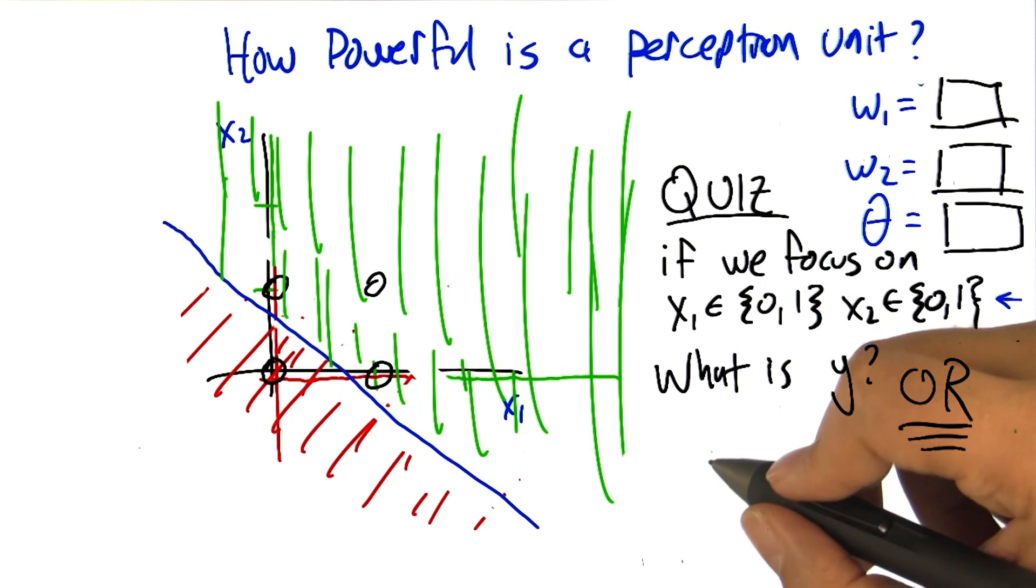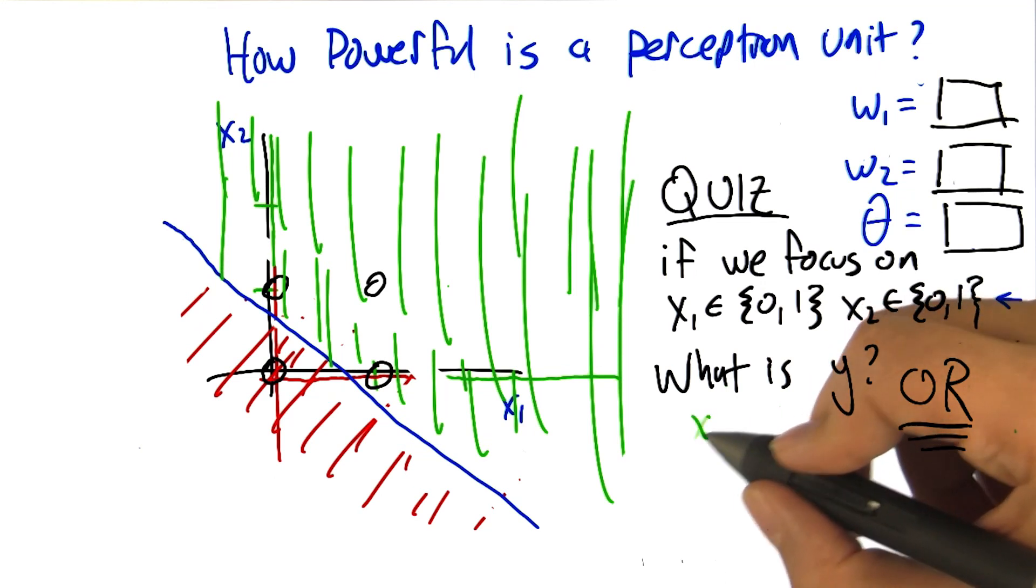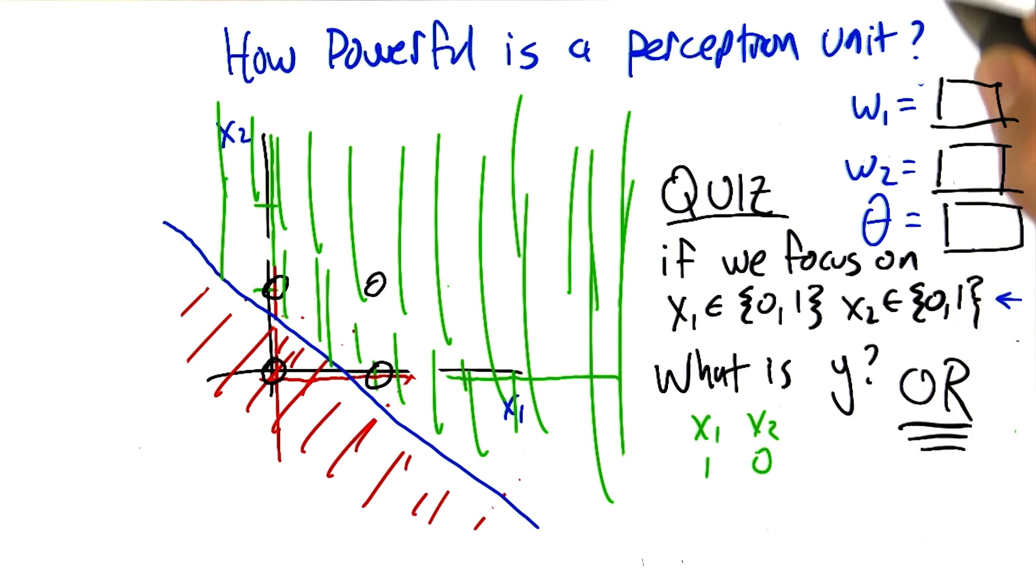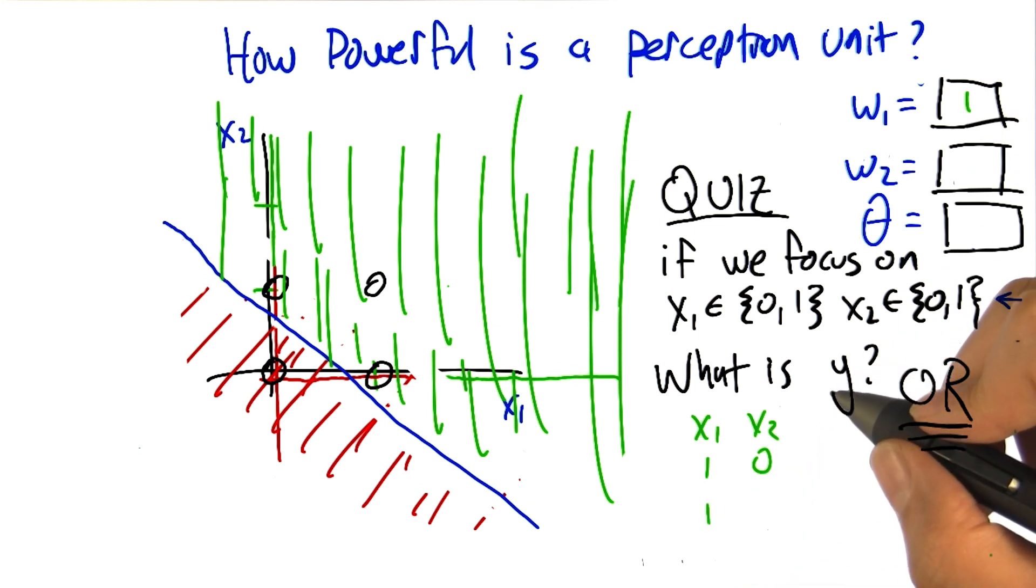So let's imagine a case where x1 is one and x2 is zero. Then, basically, well, you're right, there's a whole lot of answers. So a weight of one for x1 would give you a one. And so if we made the threshold one, that would work.